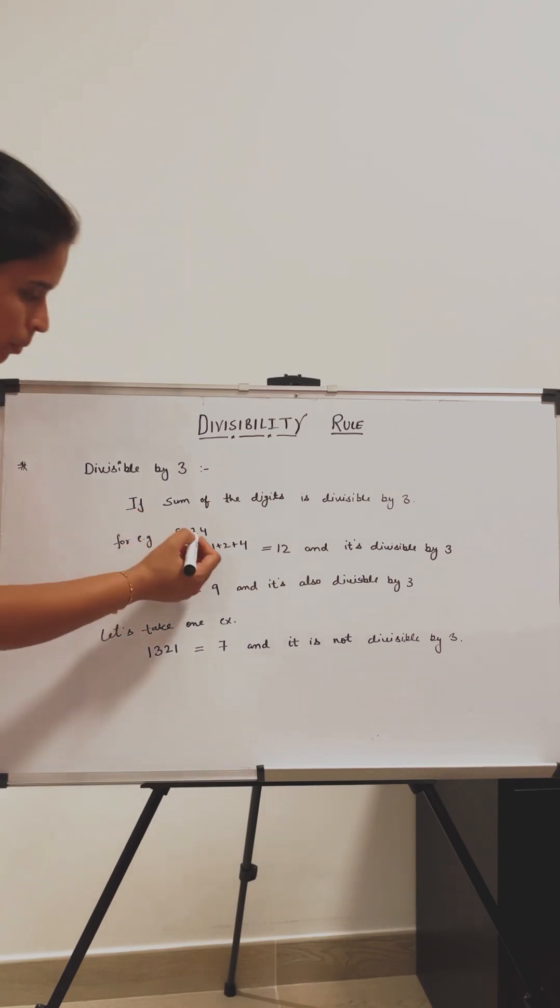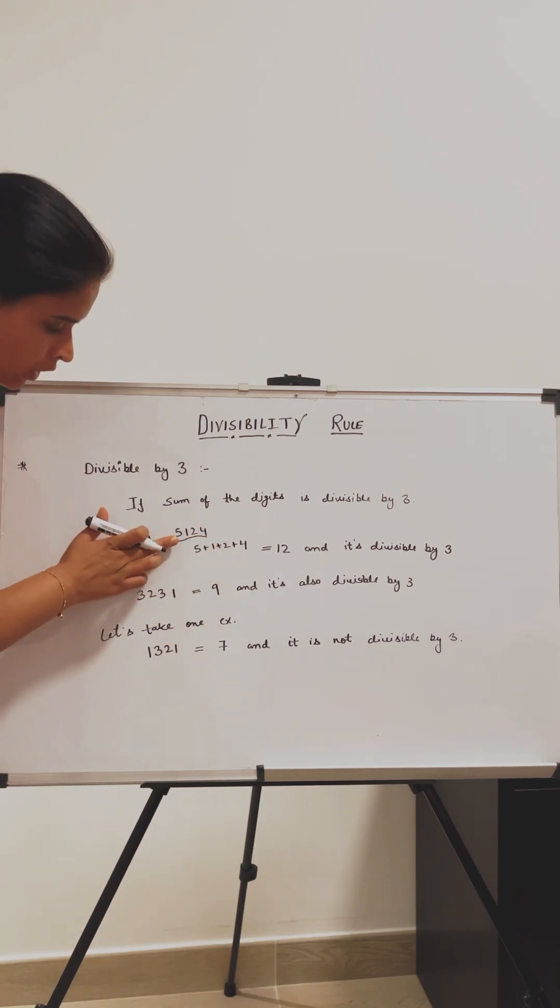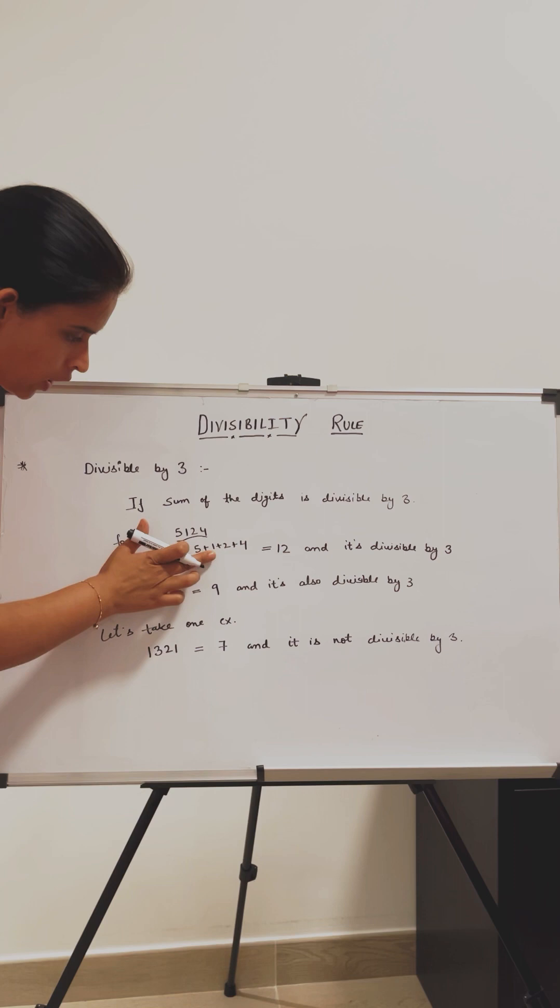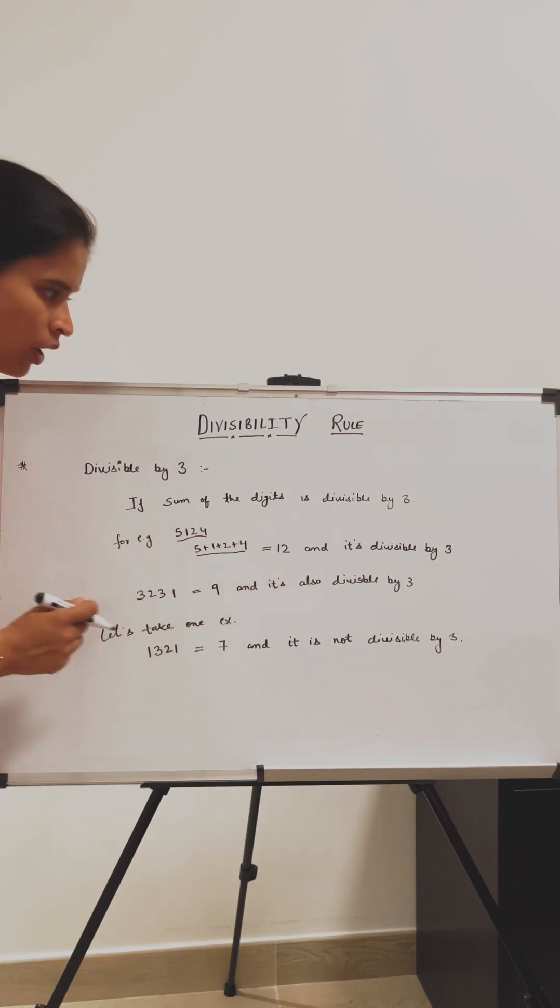For example, I have this number 5124. If we add these digits 5 plus 1 plus 2 plus 4, the sum would be 12 and 12 is divisible by 3.